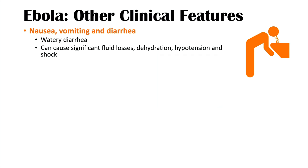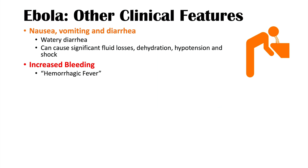Key to Ebola is an increased bleeding risk — which is why it is termed hemorrhagic fever. Ebola virus hyperactivates the immune system, causing liver damage and platelet aggregation, both of which inhibit the coagulation cascade and result in increased bleeding.